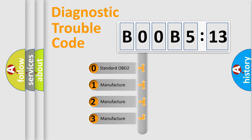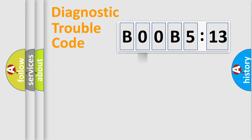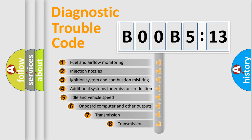If the second character is expressed as zero, it is a standardized error. In the case of numbers 1, 2, or 3, it is a manufacturer-specific expression of the car-specific error.